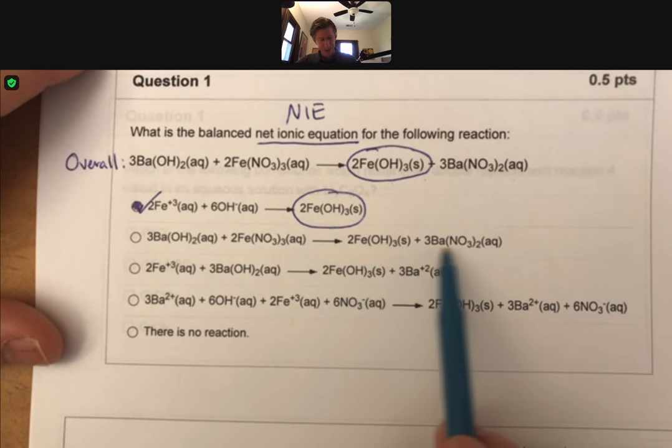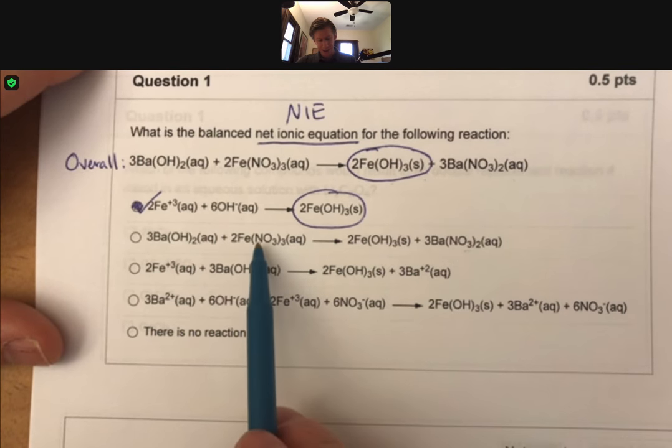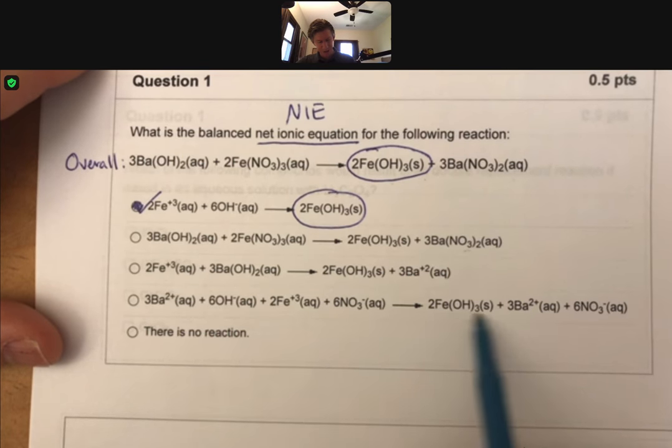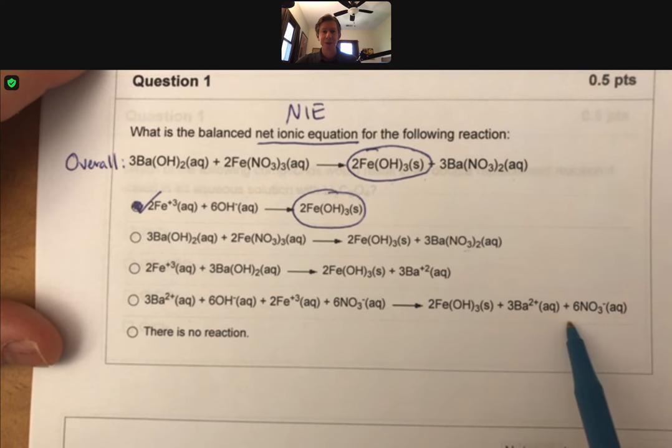So this one has an aqueous one and an aqueous one, so none of these are even close. I guess this one down here is close, but this one down here does not cancel out the spectator ions.